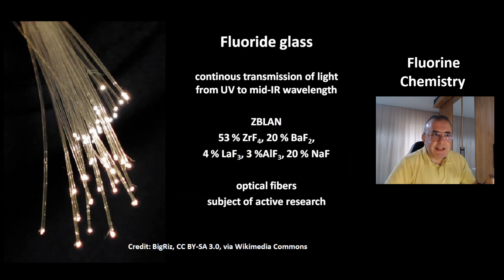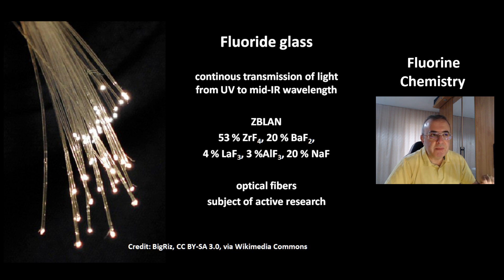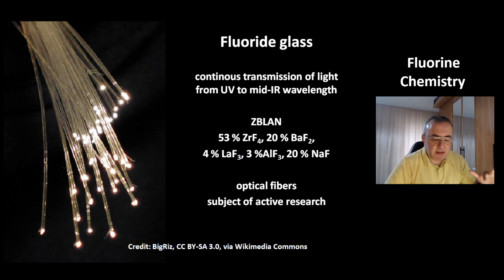Fluoride glass is special because it allows continuous transmission of light from UV to mid-infrared wavelengths. One example is ZBLAN — a mixture of fluorides from zirconium, barium, lanthanum, aluminium, and sodium. Fluoride glass can be used for optical fibers, and this is a subject of active research.